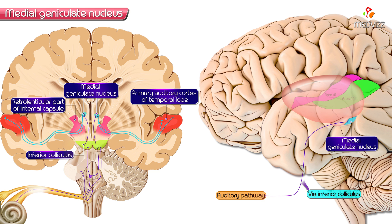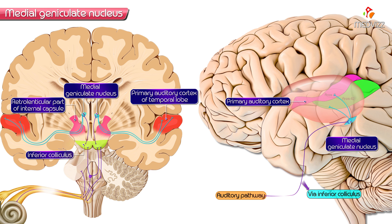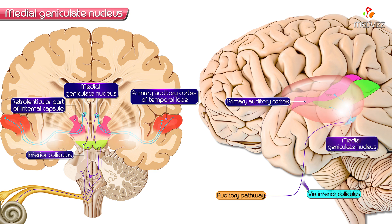After receiving auditory information, the Medial Geniculate Body has to process the information and determine how much information needs to be sent to the primary auditory cortex. The relay of auditory impulses takes place in the Medial Geniculate Body, where it checks the quality and how many impulses need to be sent to the primary auditory cortex.